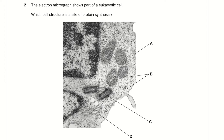Question 2: The electron micrograph shows parts of a eukaryotic cell — which cell structure is the site of protein synthesis? The site of protein synthesis is ribosomes on rough endoplasmic reticulum or ribosomes free in the cytoplasm. Option A looks like a lysosome, so it's incorrect. For B, you can see dark black granules, which is what ribosomes look like under an electron microscope, so B is correct. For C, you can see a cylindrical structure — this is going to be the centrioles. For D, because we can see vesicles, this is most likely the Golgi body.